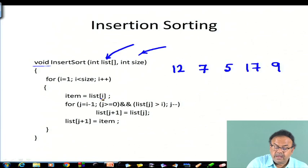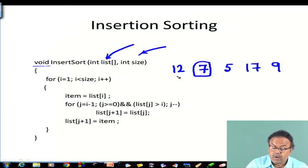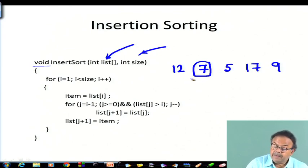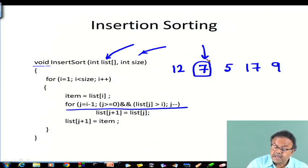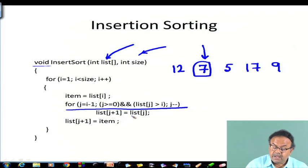With i equal to 1, we take this element as the item. For j starting at i minus 1, going while j is greater than or equal to 0 and list[j] is greater than item, we shift: list[j+1] gets list[j]. For the array 12, 7, 5, 17, 9 — taking 7 (i=1), the array becomes 7, 12, 5, 17, 9.